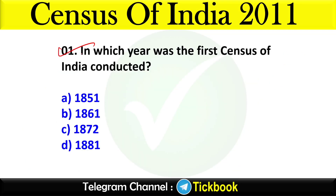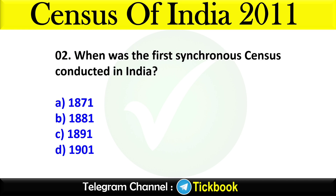Question number one: In which year was the first census of India conducted? Option number C is the right answer: 1872. Question number two: When was the first synchronous census conducted in India? Option number B is the right answer: 1881.